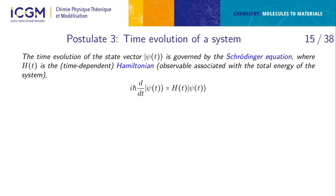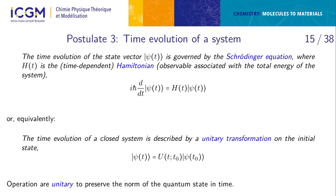Another important postulate is time evolution. A system evolves according to the Schrödinger equation. Equivalently, the state at time t₀ evolves to time t via a unitary operation. The operations must be unitary because we need to preserve the norm of the quantum state — since the state must remain normalized for an isolated system at any time t.